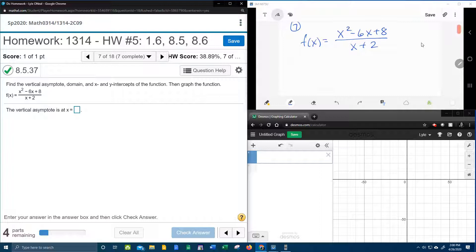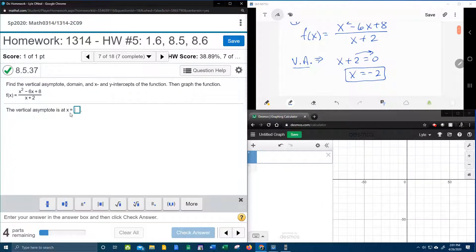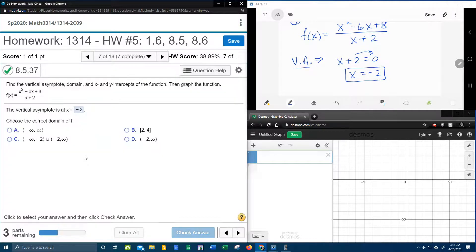So therefore to find the vertical asymptote, we need to set the denominator equal to 0 and solve. Moving the 2 over gives me negative 2, and then there is our vertical asymptote. Notice it already has the x equal, so I just need the negative 2.